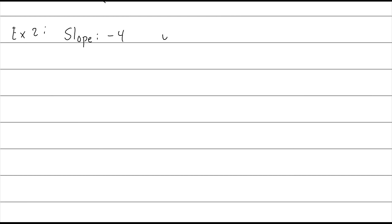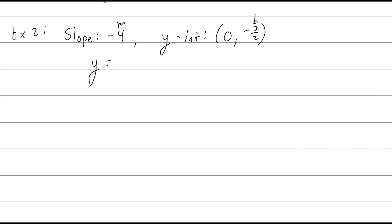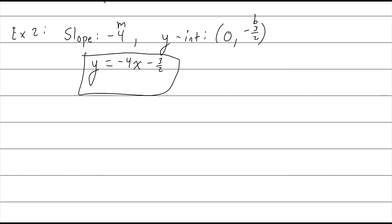Example 2: we are given a slope of negative 4 and a y-intercept of (0, -3/2). This is just as simple as the last problem because I'm given m and I'm given b. So plugging into y = mx + b, I have y = -4x + negative 3/2, or minus 3/2. Don't let the fraction throw you off there.